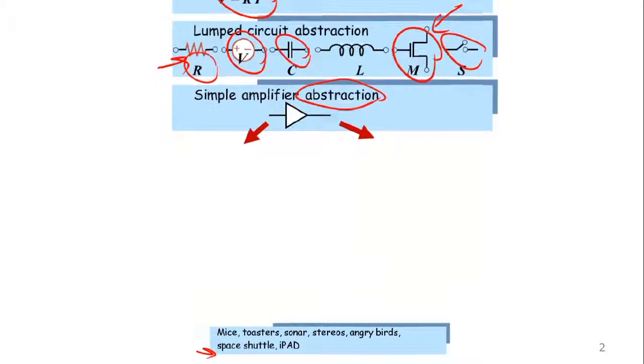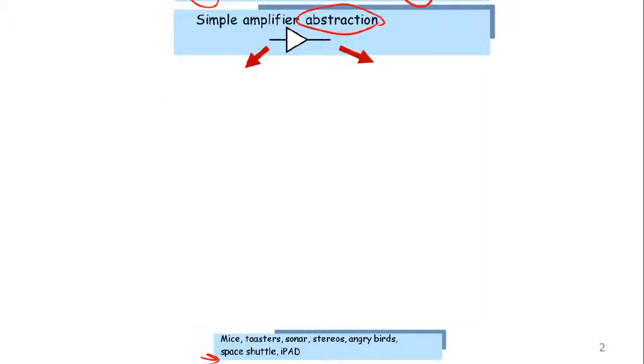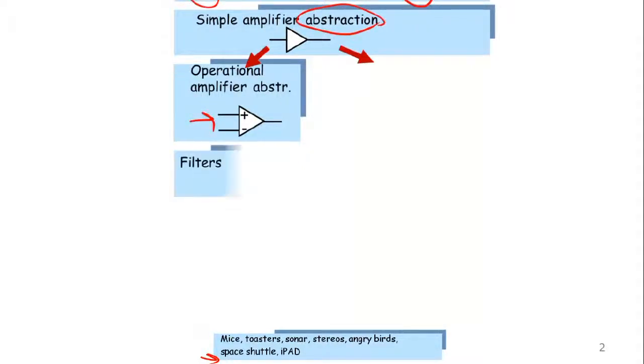So at this point, life can take a couple of turns once we build a simple amplifier abstraction. So one thing we could do from there is use that to build what we call the operational amplifier abstraction.